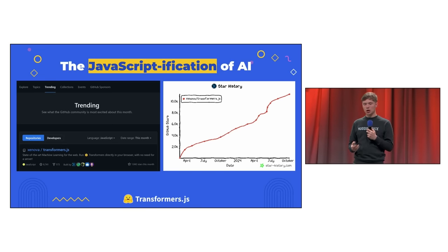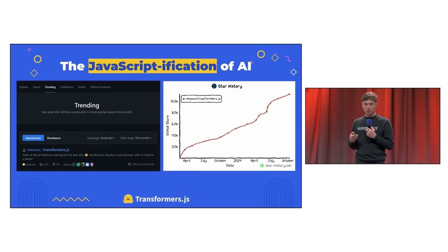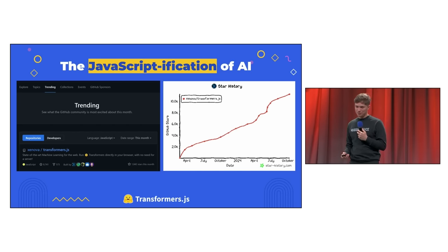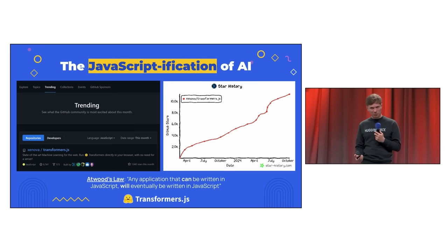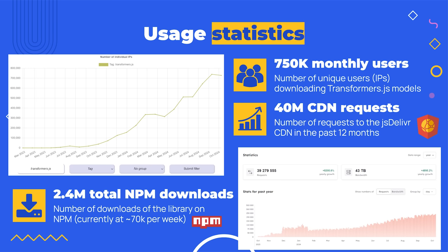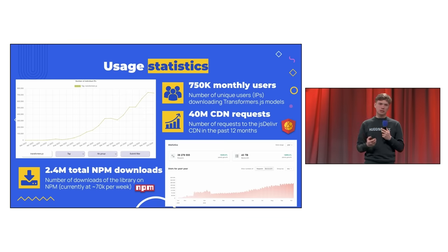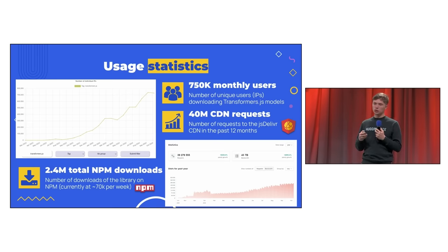We've been extremely lucky to have received so much support from the community, and now Transformers.js is one of the fastest-growing JavaScript libraries on GitHub. Just recently, we were the number one trending repo on the site, growing by an additional 2,000 stars in the span of a month. As of October this year, we're averaging around 750,000 unique monthly users. We host the JS and WebAssembly files using jsDelivr, for which we've received around 40 million requests in the past 12 months. In total, we have over 2.4 million downloads on NPM, currently averaging around 70,000 per week.